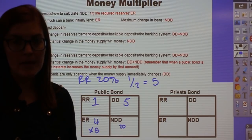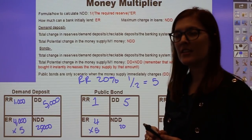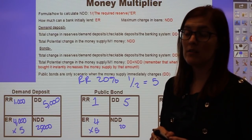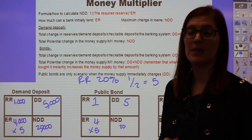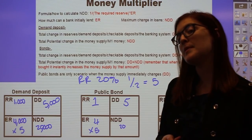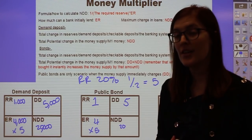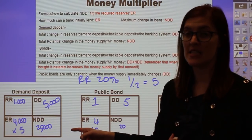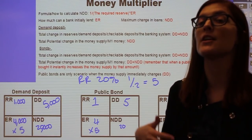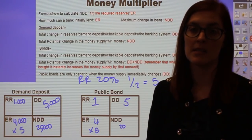The next question — how much could this bank initially lend out? — is $4 million, same as the demand deposit. But how much could the money supply potentially change? The $5 million instantly changed the money supply, and then $20 million was created through the money multiplier effect. So the maximum potential change in the money supply for a public bond is $25 million — DD plus NDD — versus demand deposits where just NDD created new money. The total that went through the banking system is also $25 million.